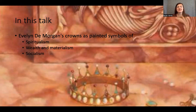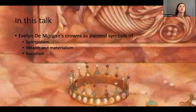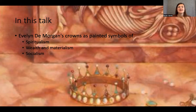We're going to look at what is meant by this, how and why she used the symbol of the crown in her paintings, and how we can better understand her views on things she engaged with — such as her spiritualism, her views on wealth and materialism, and her socialism as well. Quite a lot to get through today, so I hope you're sitting comfortably and you've got a cup of tea.